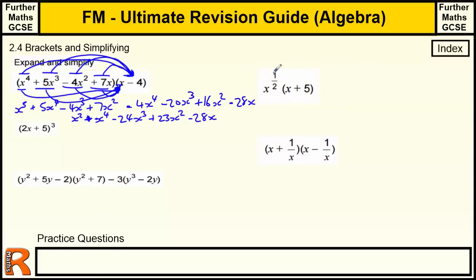You might get given something that's testing your knowledge of indices. So x^(1/2) times (x + 5). We're just going to get x^(1/2) times x plus x^(1/2) times 5. So x^(1/2) times x¹ is x^(1/2) plus 1, which is 1 and a half, or 3 upon 2. And that times by 5 we just put the 5 in front of the x^(1/2). It's better to write indices with an improper fraction or top heavy fraction.